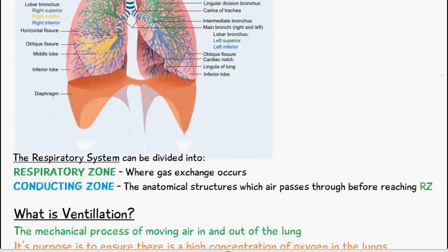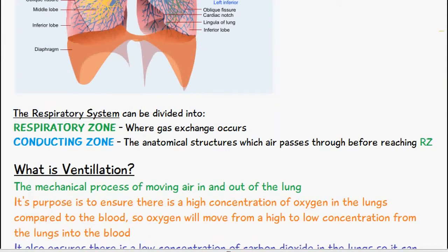The respiratory system we can divide into two parts. We have the respiratory zone, and this is where gas exchange occurs. We have the conducting zone as well, and this is all the anatomical structures which air can pass through before it reaches the respiratory zone.